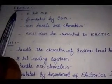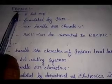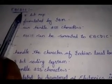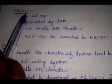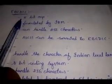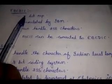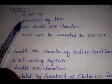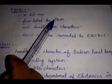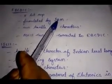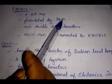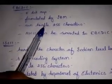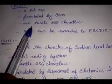The next encoding system is EBCDIC. Its full form is Extended Binary Coded Decimal Interchange Code. It is an 8-bit representation encoding system, formulated by IBM — IBM stands for International Business Machine. This coding system can handle 256 characters.